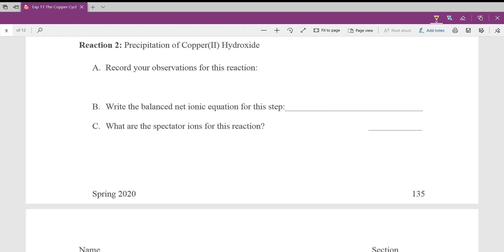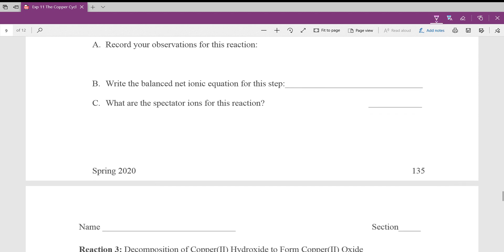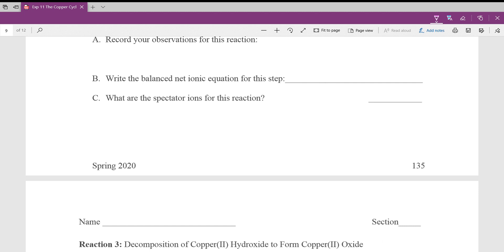Step 2, record your observations. That's straightforward. Again, balance a net ionic equation. Again, straightforward. Spectator ions. When we write the spectator ions, we have to write, there's more than one for this reaction, and we have to write ions. Ions have charges.